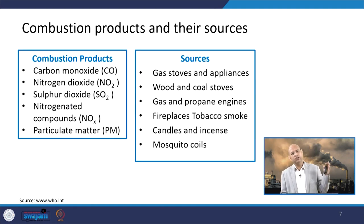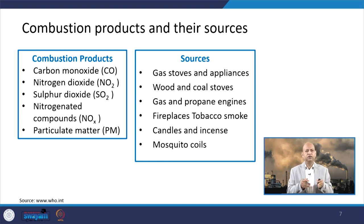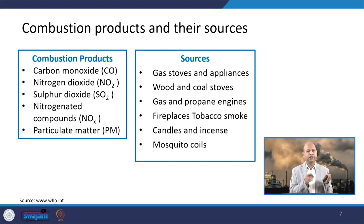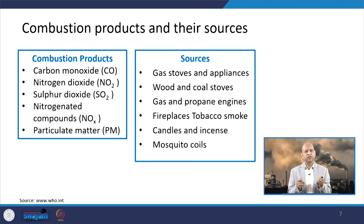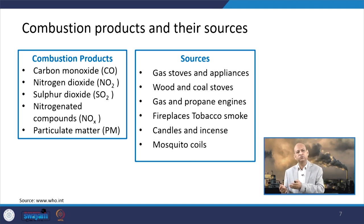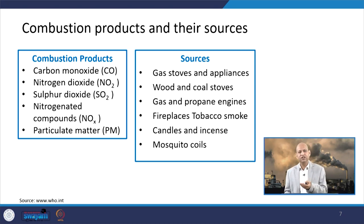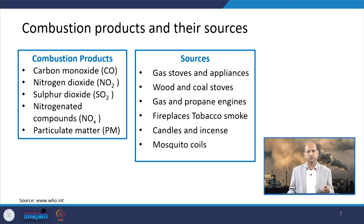Relating combustion products to their sources is a comprehensive topic. Combustion products include CO, NO2, SO2, NOx, and particulate matter. They are emitted from gas stoves or appliances, wood and coal stoves, fireplaces, mosquito coils, and candles — all of which may be sources inside the house.